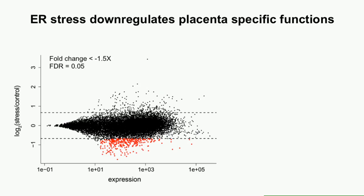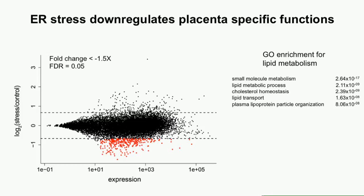The next thing we looked at was genes downregulated by ER stress in the placenta — these often get ignored because upregulation is considered more important in this stress response. Shown in red are genes downregulated one-and-a-half-fold or more at an FDR of 5%. We were fairly surprised to find they were very strongly enriched for lipid metabolism, cholesterol homeostasis, lipid transport, and other lipid-related genes.